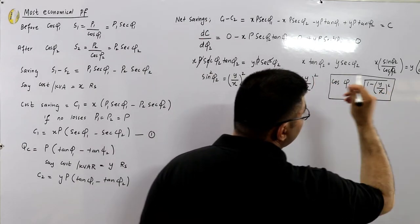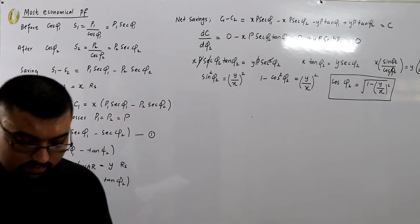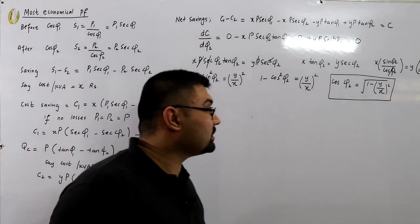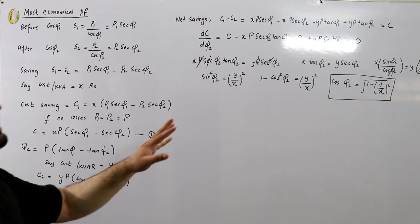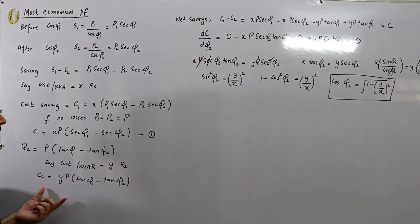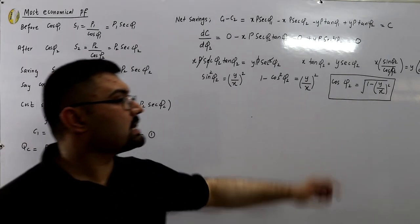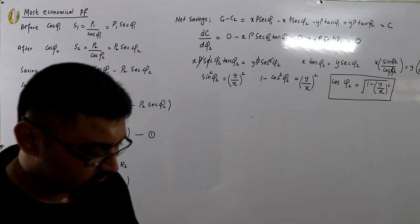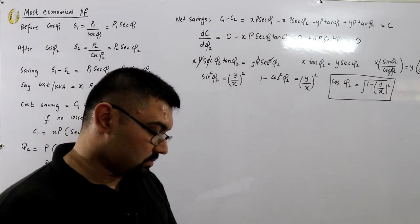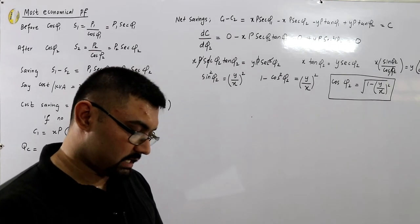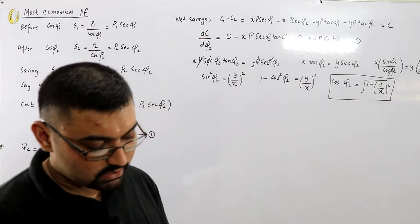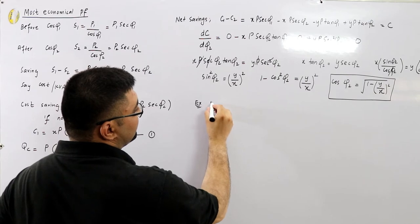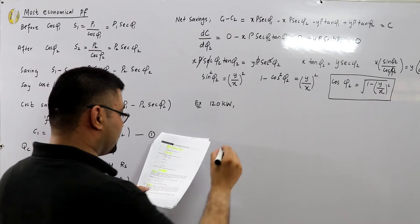Let's plug in values. A steel scrap melting plant uses a 120 kilowatt induction furnace operating at a 0.7 power factor lagging. This is our initial power factor, cos(φ1) = 0.7.